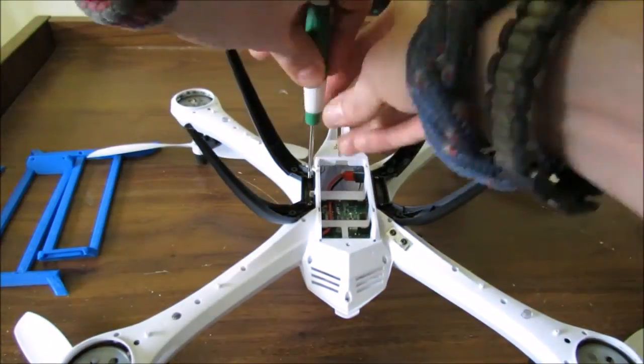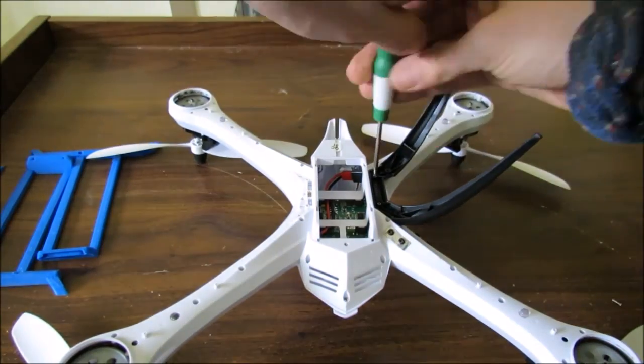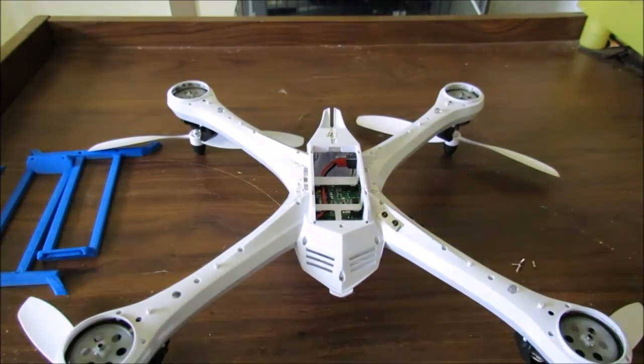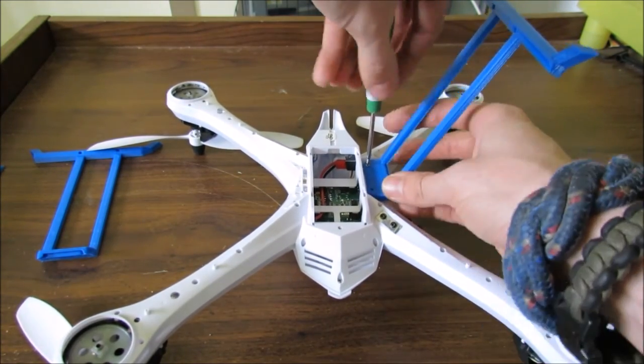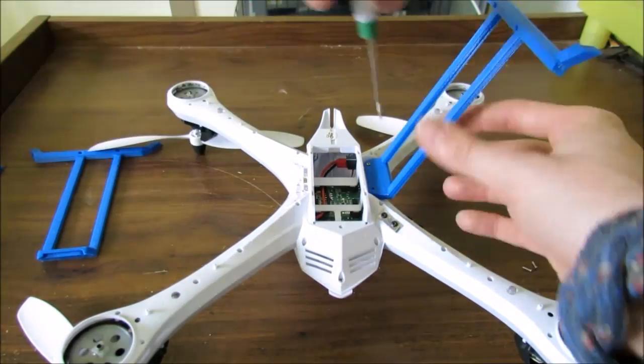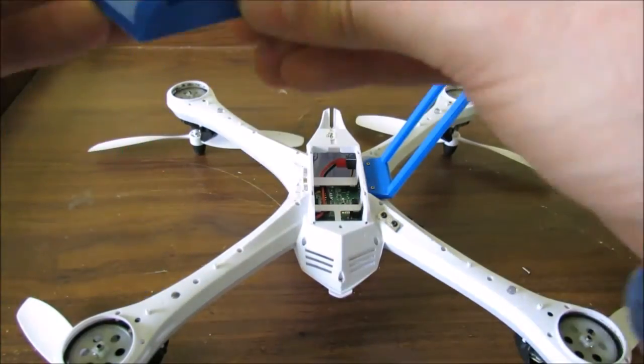First we will need to remove the stock landing gear and place the screws to the side. Orientate the landing gear so the short side of the skid is facing the front of the quadcopter, then use two screws to attach it. Then attach the other side.